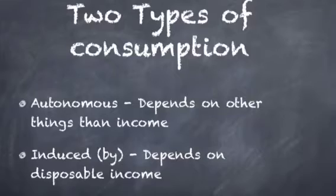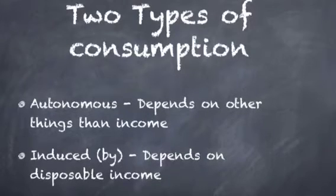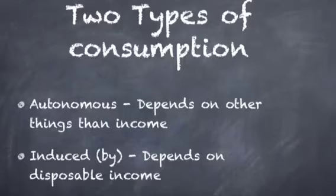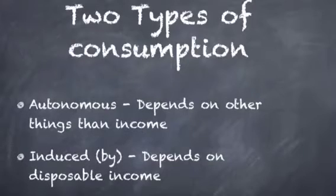Basically there are two types of consumption. There's autonomous, which depends on other things rather than income.